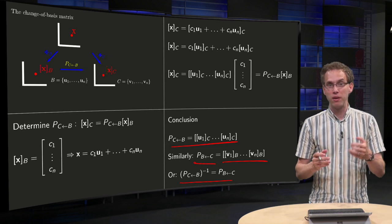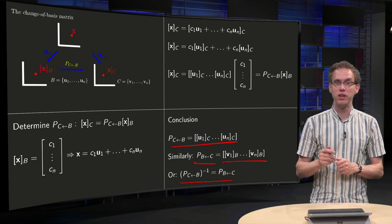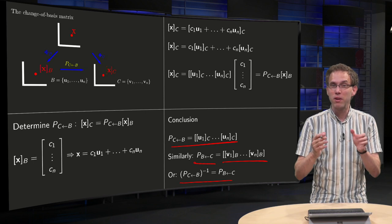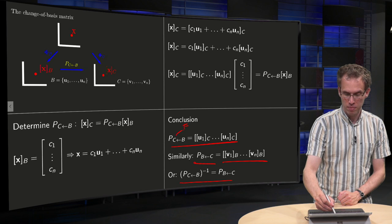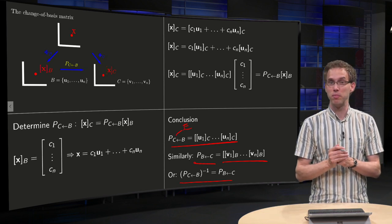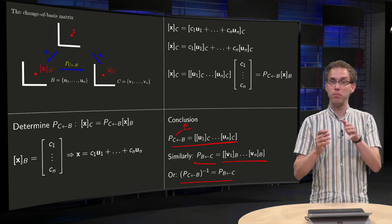Now, finally, what is an easy way to remember this formula, to memorize the formula? Well, if you replace the C over here by an E, by a standard basis, then you get P from B to E, which is just P_B, the normal matrix P_B.